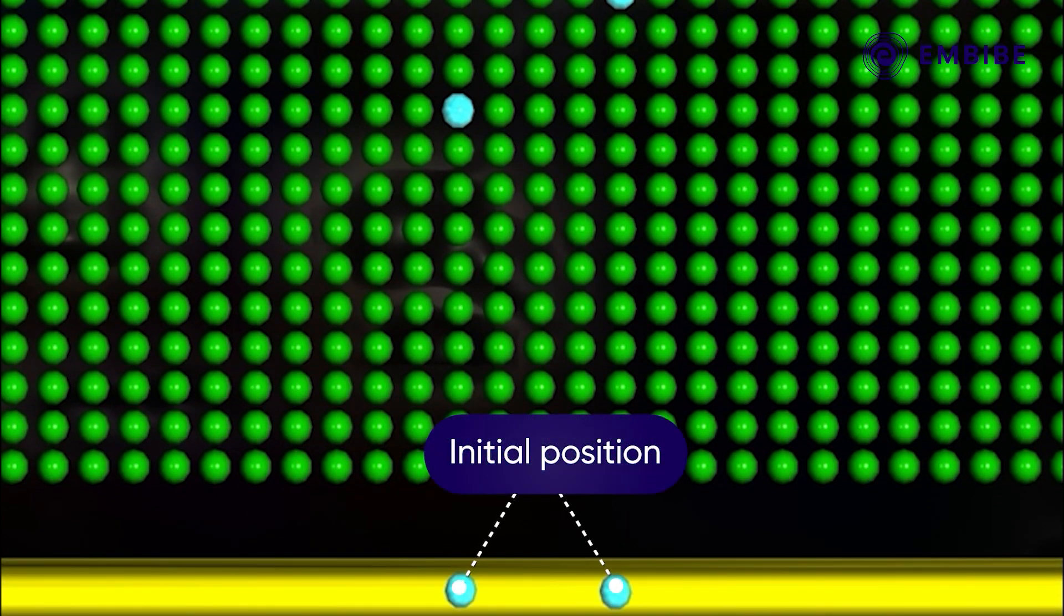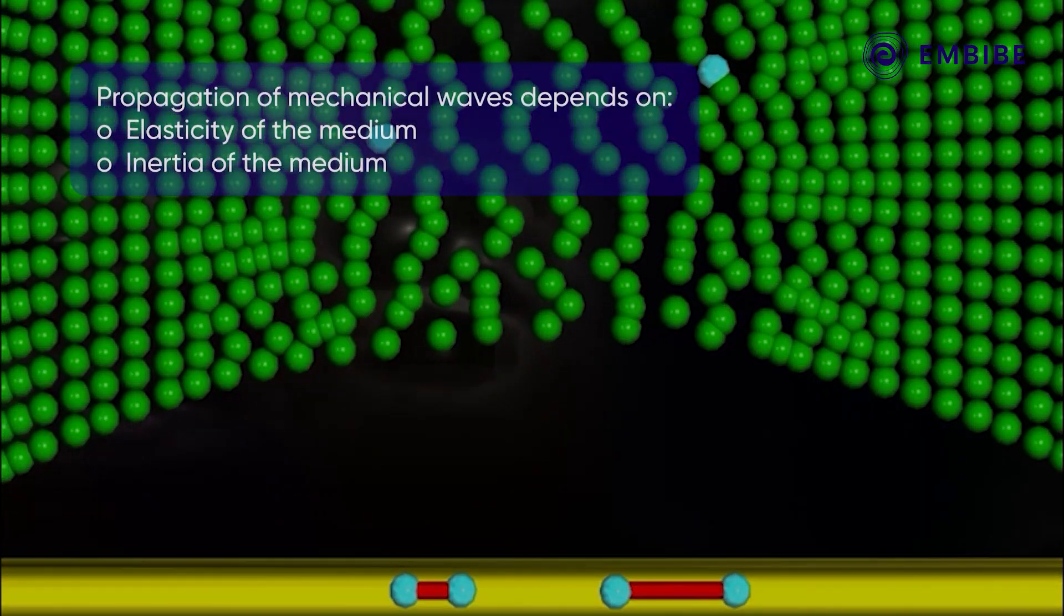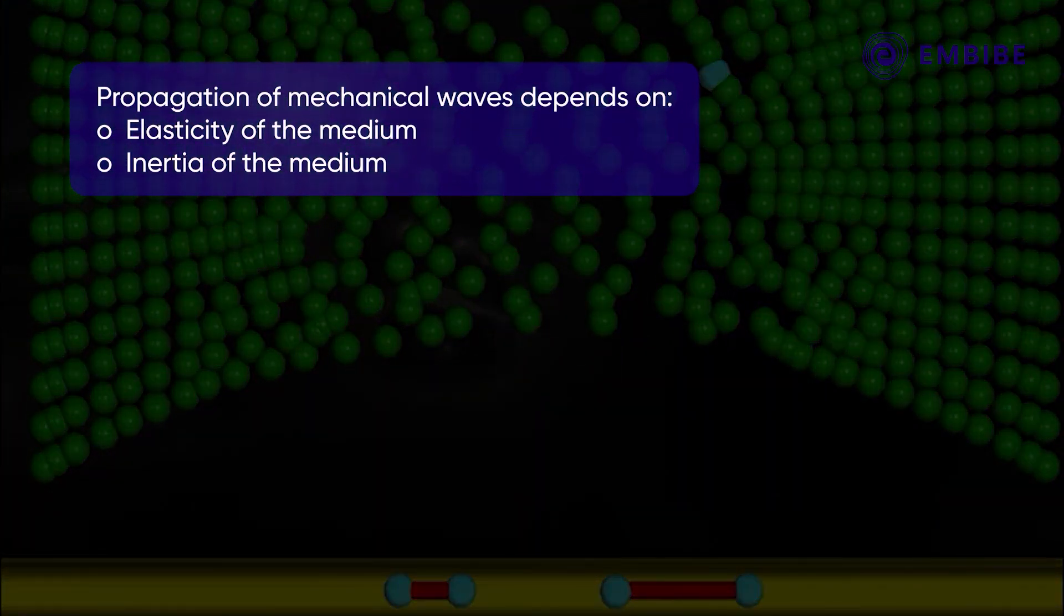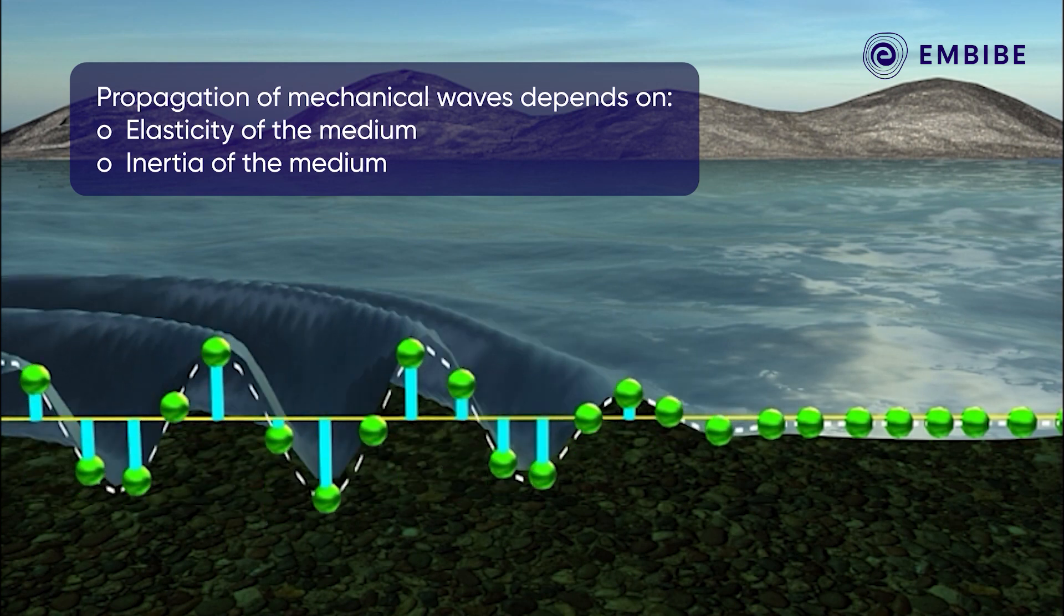Moreover, the inertia of a medium plays a vital role in deciding the displacement of the displaced portion. Thus the elasticity and the inertia of the medium are necessary for the propagation of mechanical waves in a medium, and the speed of waves is determined by these two properties.